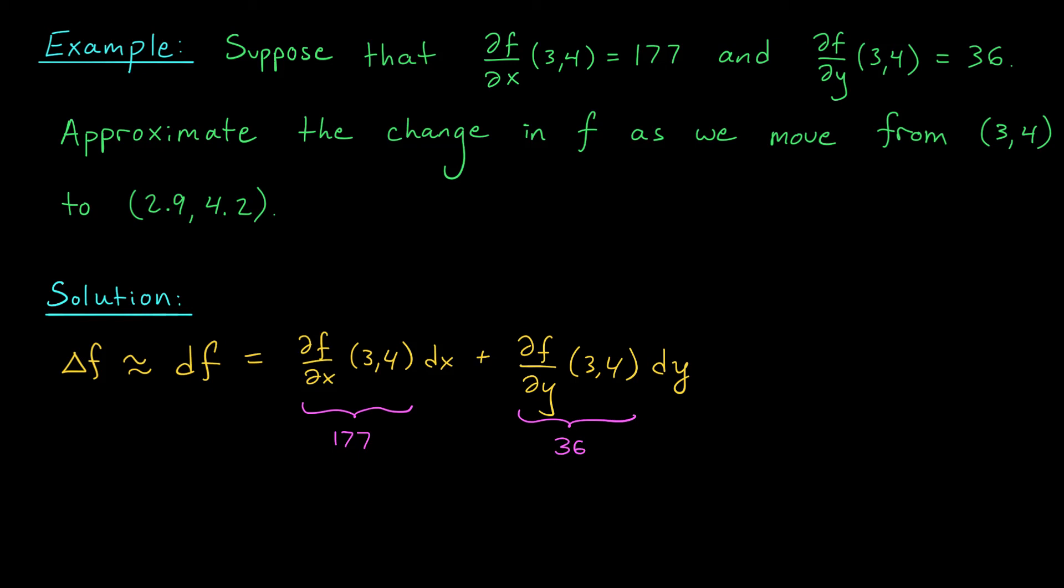But what are these quantities dx and dy? Well, dx is the change in x, delta x. As we move from (3, 4) to (2.9, 4.2), x is going to decrease by 0.1. So dx is equal to delta x, which is minus 0.1.